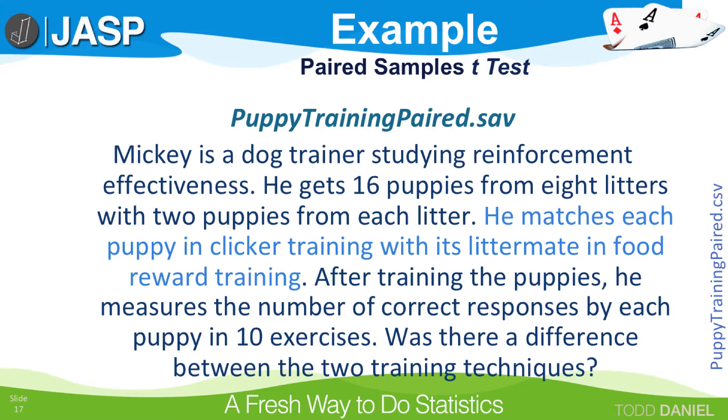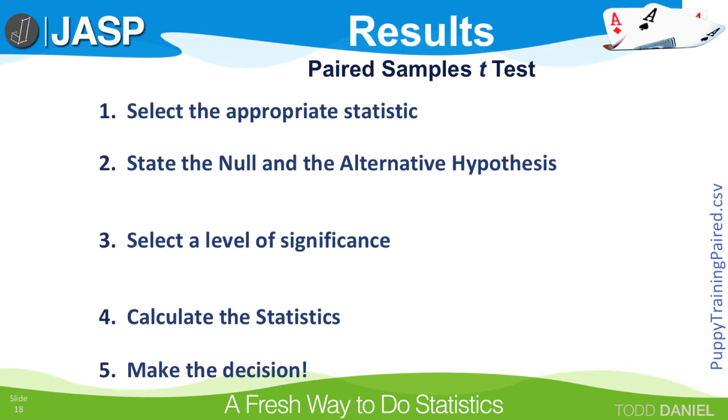Let's walk through the five steps of hypothesis testing. Step one, select the appropriate statistic. We will compare two dependent samples. One sample is the puppies who were trained using clicker training. And the second sample was their litter mates, the twin siblings, if you will, who were trained with food reward. Because they are matched pairs, their scores are not independent. To compare these two samples, we will use a paired samples t-test.